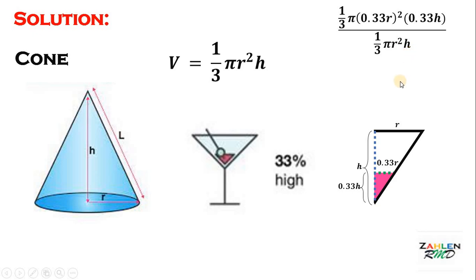Now simplify. As you can see, all of the variables are cancelled out. h is cancelled out. We can also cancel out r squared, pi and one third. And what remains is 0.33 squared times 0.33. Simplify and we get 0.035937 or simply 3.59%. Therefore, the wine is just 3.59% of the glass. It follows that it is not half full.